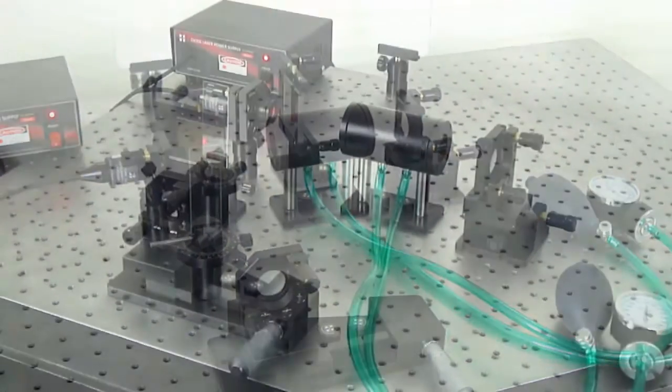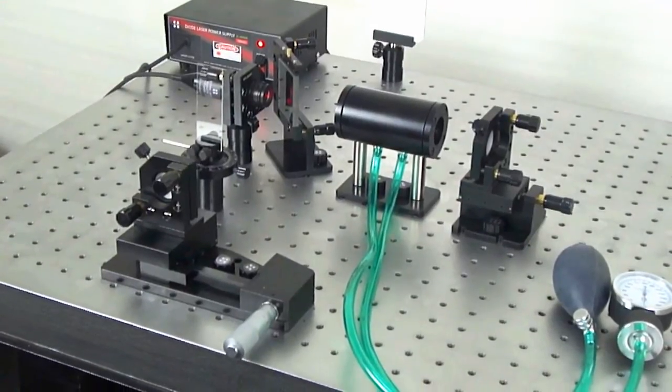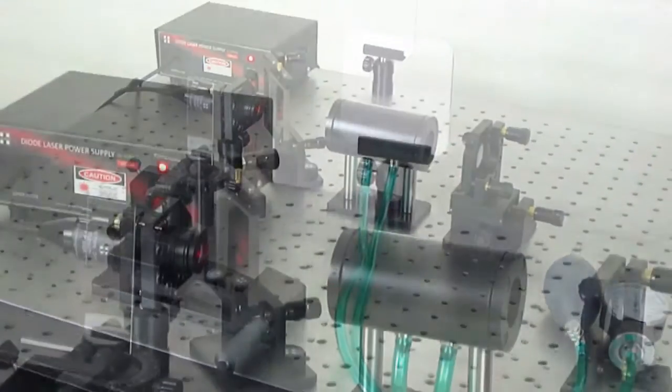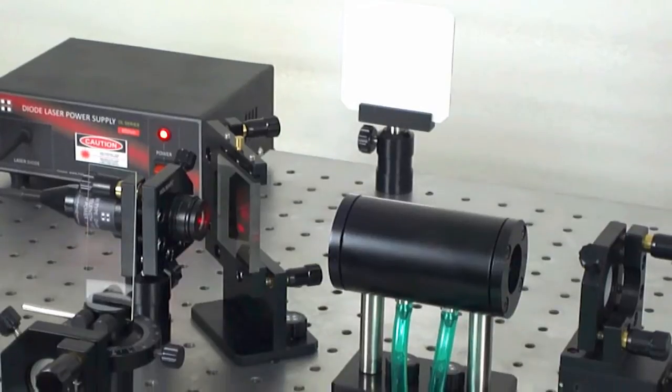The Michelson Interferometer is a widely used instrument for measuring wavelength of light, refractive index of transparent materials, and more.